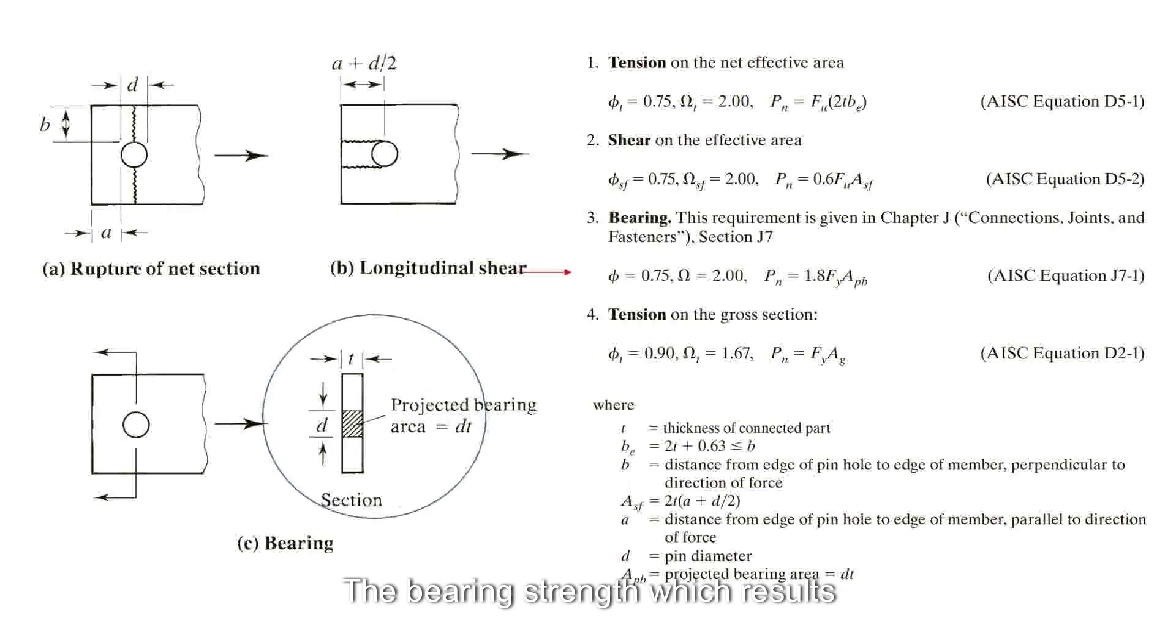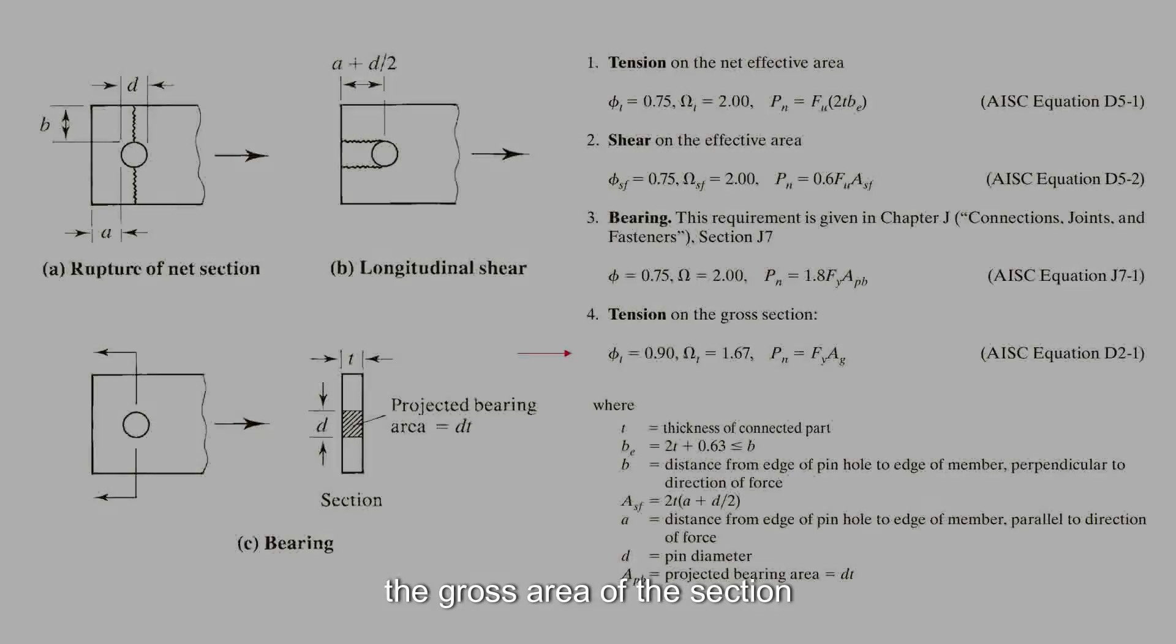The bearing strength, which results from the pin pressing against the edges of the hole surface, is determined by calculating the product of the bearing area and the yield strength increased by 80 percent. Lastly, is the yielding of the cross section, which is found by using the yield strength and the gross area of the section.